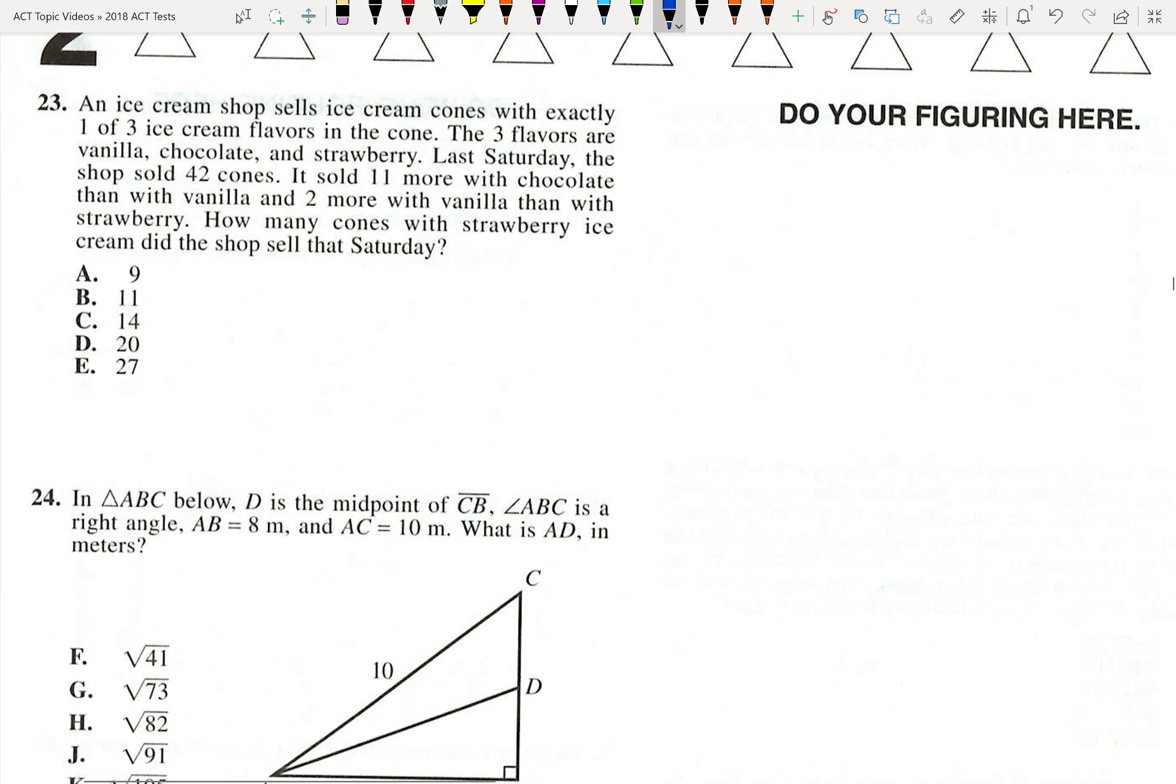But if we're solving this actual question, they sold 11 more of chocolate than vanilla. So that would have erased my blue line. There we go, finally. So they sold 11 more with chocolate than vanilla. So chocolate sold more than vanilla. So what I'm going to write is chocolate is equal to vanilla plus 11.